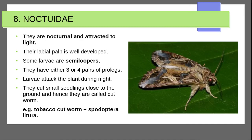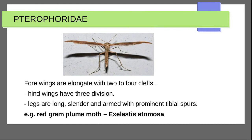Next family is Noctuidae — nocturnal moths attracted to light. Labial palps are well developed. Some larvae are semi-loopers — they form a partial loop. They have either three or four pairs of prolegs. Larvae attack plants during night. They cut small seedlings close to the ground — hence they are called cutworms. Example: Agrotis species.